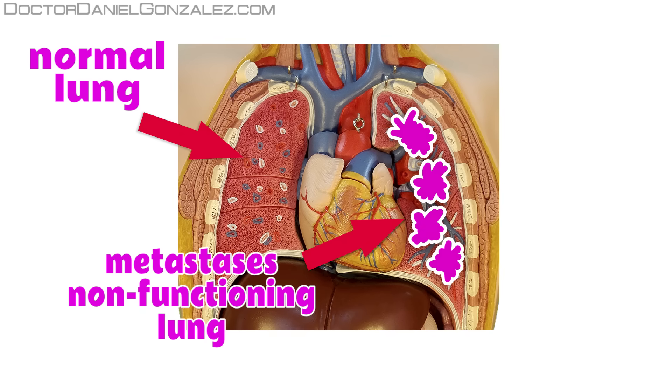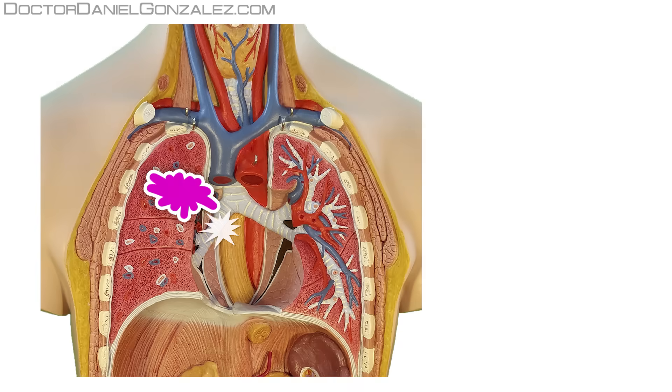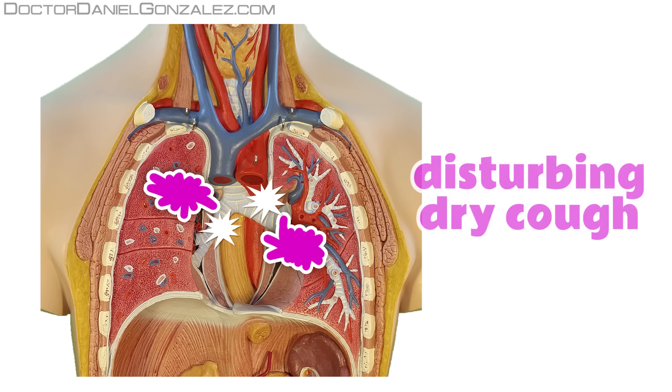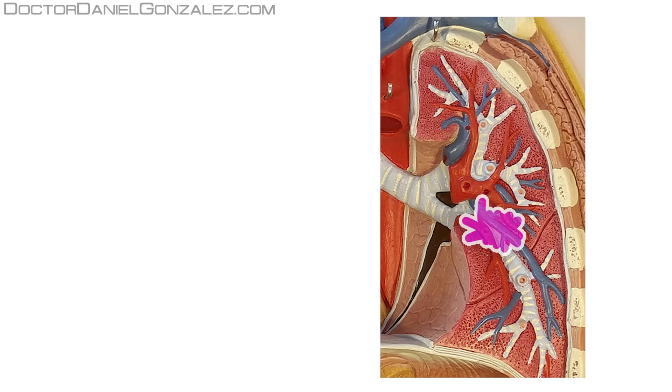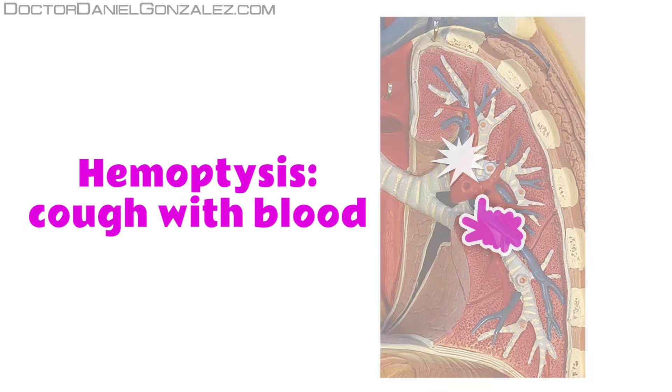If they touch a breathing tube, bronchus or their branches, they can irritate them, appearing a very annoying dry cough. If lung metastases are placed near a blood vessel, they may break it, pouring a little blood with coughing.